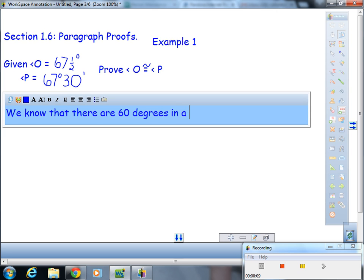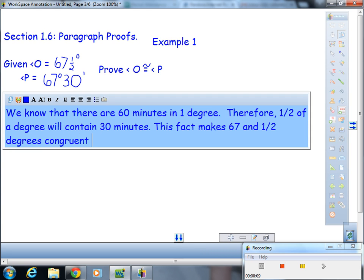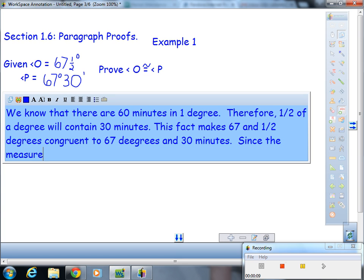Sorry, 60 degrees in...60 minutes in one degree. Therefore, one half of a degree will, this fact will contain 30 minutes. This fact makes 67 and one half degrees congruent to 67 degrees and 30 minutes. Since the measures of the angles are the same, that's it. That's all you got to do.